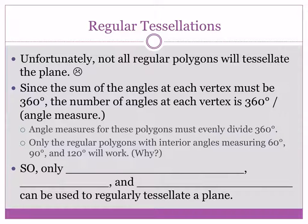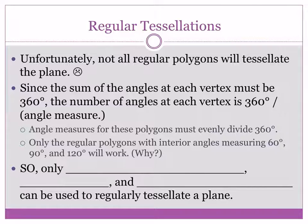Some angle measures from the shapes included 60, 90, 120, and 30. The 30-degree angle wasn't coming from a regular polygon. The others — 60, 90, and 120 — all divide 360 evenly, giving a whole number result. So angle measures for regular polygons must evenly divide 360, and there are only three that work: 60, 90, and 120.